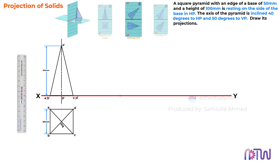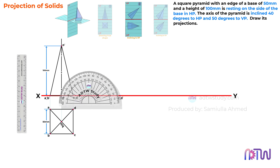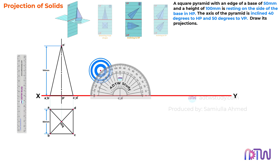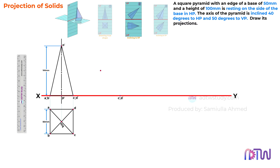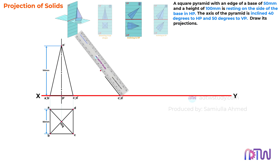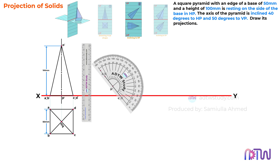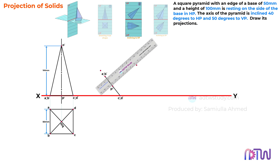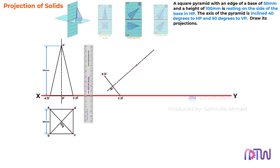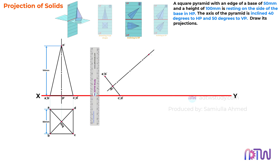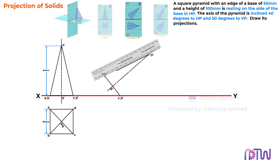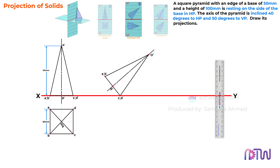Mark a point on the reference line, labeling it as C dash slash D dash. Take a protractor and place it on this point, then mark a point at a 50 degree angle. Using this point as a reference, draw the line representing the inclined base of the pyramid, measuring 50 millimeters in length. The midpoint on this baseline will be our point P dash, from which the axis of the pyramid will extend. Use a protractor positioned at point P dash to mark a point at a 90 degree angle, then draw the axis of the pyramid as shown. Finally, take a ruler and measure a point 100 millimeters from point P dash along the axis — this will be the apex point of the pyramid.